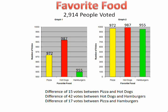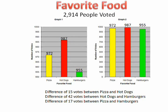Look at the difference between pizza and hamburgers. The bars make it look as if they got over 3 times as many votes when they only got 17 more votes. So in this case, Graph 2 is the better representation.